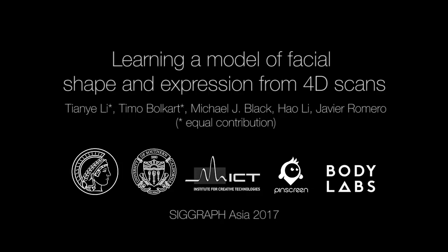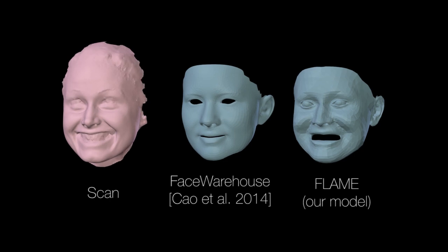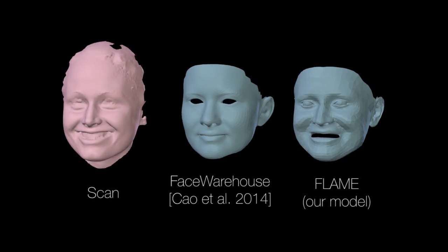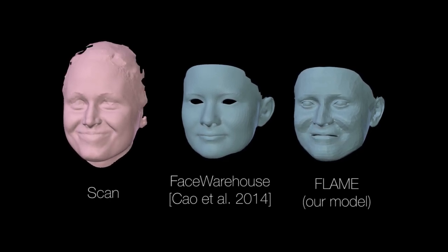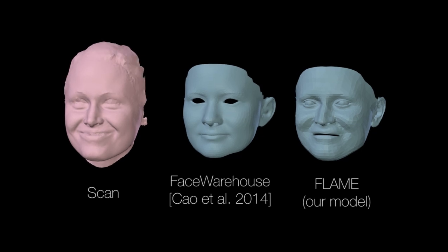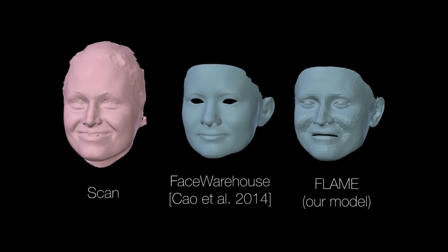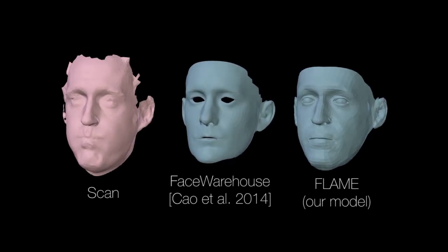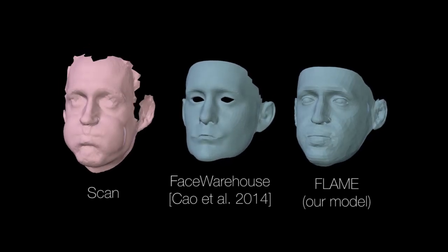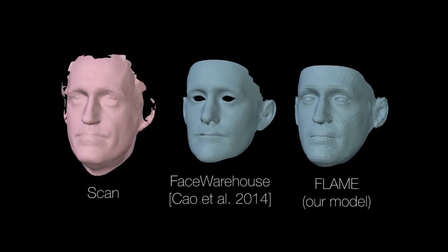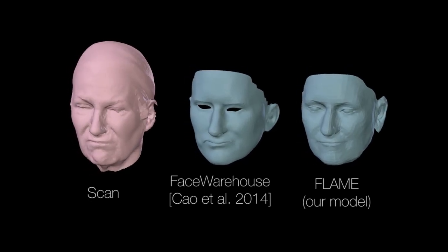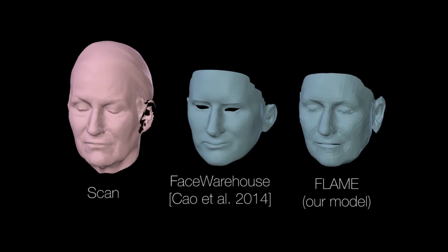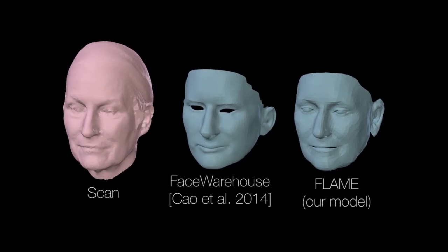Existing 3D face models do not generalize well to all face shapes and expressions. We define and learn a new face and head model called FLAME, which stands for Faces Learned with an Articulated Model and Expressions. FLAME is significantly more expressive than existing models. A key idea behind FLAME is to factor facial motion and expression into different causes, and by doing so, learn the related shape changes from data.